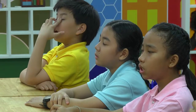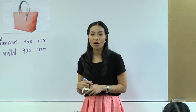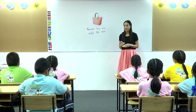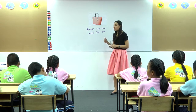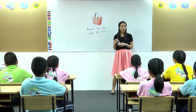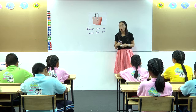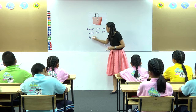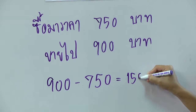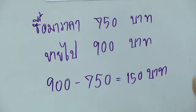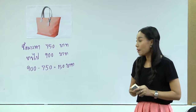More money. ขายได้ 900 บาท ซื้อมา 750 บาท 900 ลบ 750 เท่ากับ 150 บาท นั่นเรียนรู้ไหมว่า 150 บาทนี้มันเป็นเงินที่อาจารย์ได้เงินมากขึ้น เขาเรียกว่าอะไร? กำไร เรียกว่ากำไร เคยได้ยินไหมคะ? เคยครับ